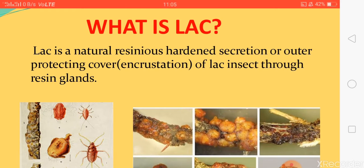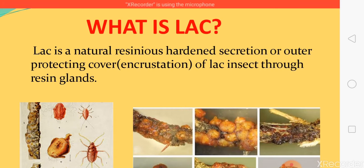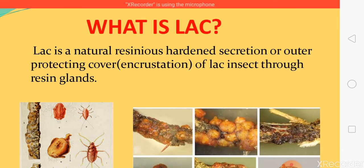Inside this incrustation — the outer protective covering, which can also be called a cell — the lac insects are present. Lac insects belong to the order Hemiptera. Their life cycle has three stages: egg, nymph, and adult.